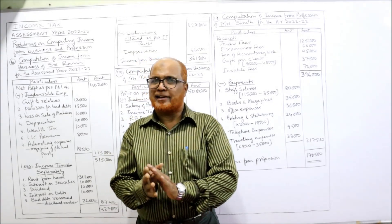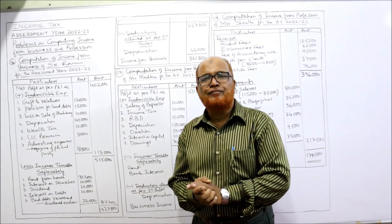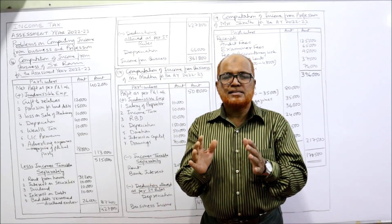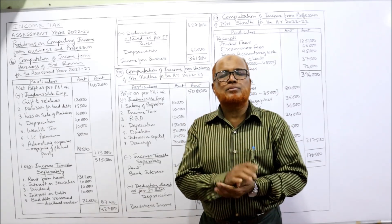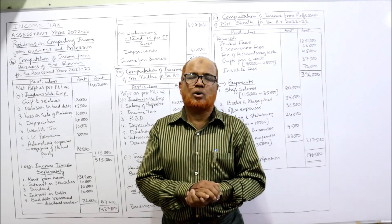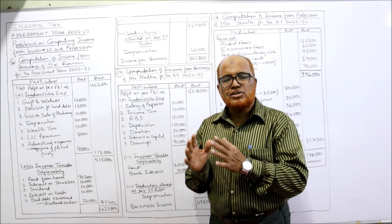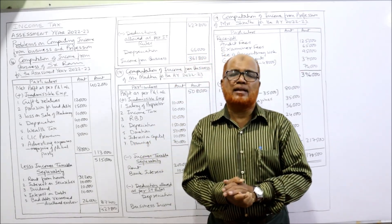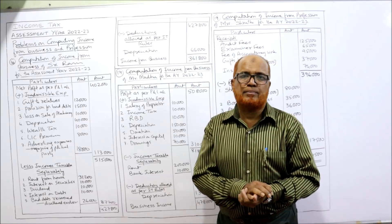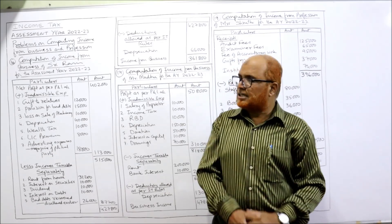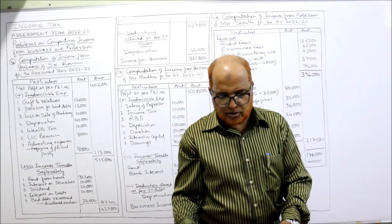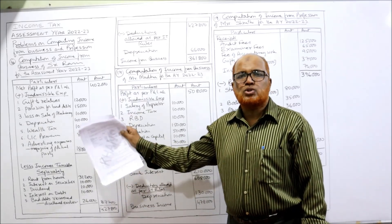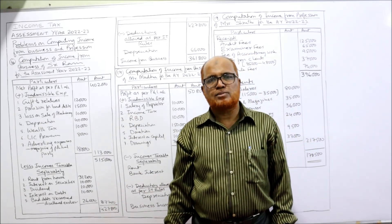Hello viewers, welcome to my channel. I'm Hashem Ali Khan. So far 15 problems I have completed on computing the income from business. This is the last and final video on the problems of profits and gains of business or profession. In this video, the last three problems I am going to explain. This will be the end. In the next video we'll start the next head of income, that is capital gain. Before starting the 16th problem, I expect my viewers to have a printout of the problems which I have given in the link under my description.